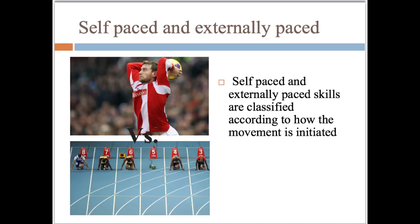Self-paced and externally paced skills are classified according to how the movement is initiated. The footballer decides at what point the ball will be thrown in, whereas the starter will decide at what point the 100m race will start. The bottom picture shows an empty lane 5, where Usain Bolt turned an externally paced skill into a self-paced skill by jumping the gun and getting himself disqualified from the 2011 World Championships.